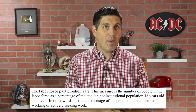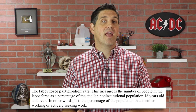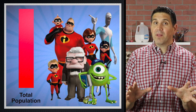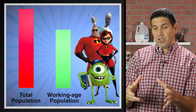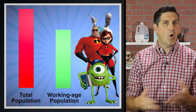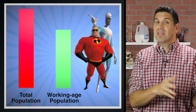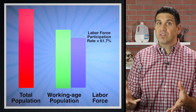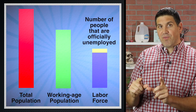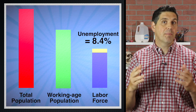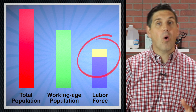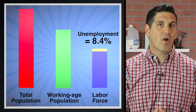The labor force participation rate is the number of people in the labor force divided by the working age population times 100. Here's a recap and a visual: the total population includes everyone, including little kids and super old people that just can't work. When you take them out, you get the working age population, but that includes people who don't want a job, like full-time students or stay-at-home moms. When you take them out, you end up with the labor force and the labor force participation rate. Inside the labor force you see the number of people who are actively looking for a job but don't have one, and that gives you the unemployment rate. That unemployment rate can go up or down, and that shows you what's happening in the overall economy.